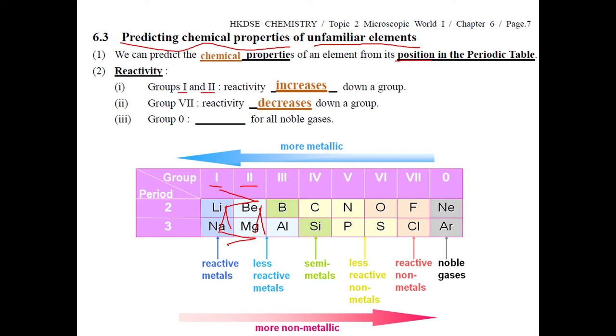For Group 7, you find the reactivity is decreased down the group. Similarly, you know for the non-metal, also for Group 6, it should be decreased down the group.